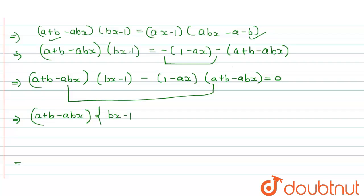This one here, there will be bx minus one minus one minus one minus ax, so a plus b minus abx.